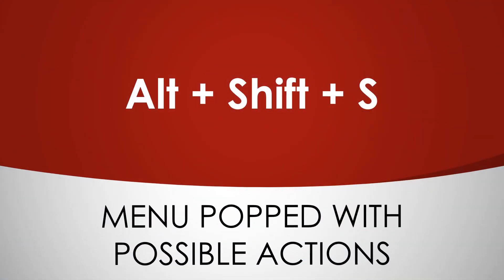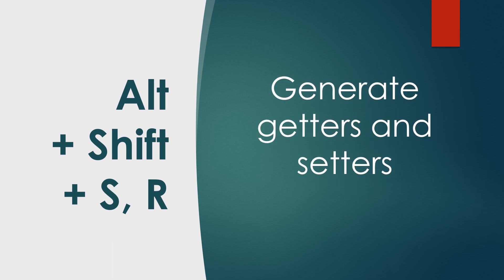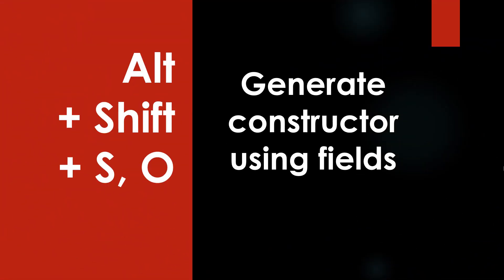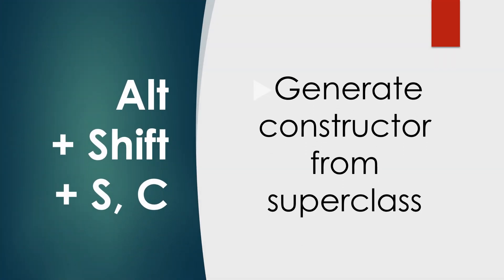Alt+Shift+S pops up a menu with all possible actions at that point. Alt+Shift+S, R generates getters and setters for the fields of the class. Alt+Shift+S, O generates a constructor using fields.